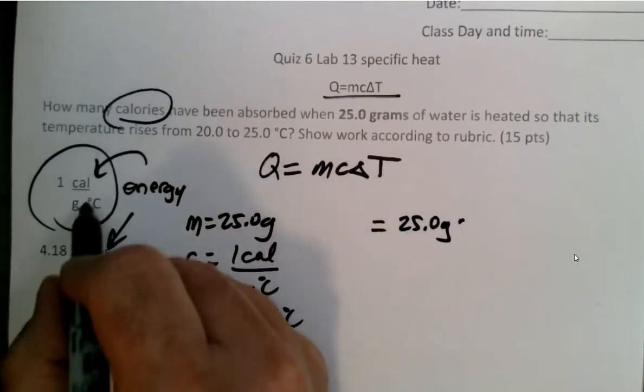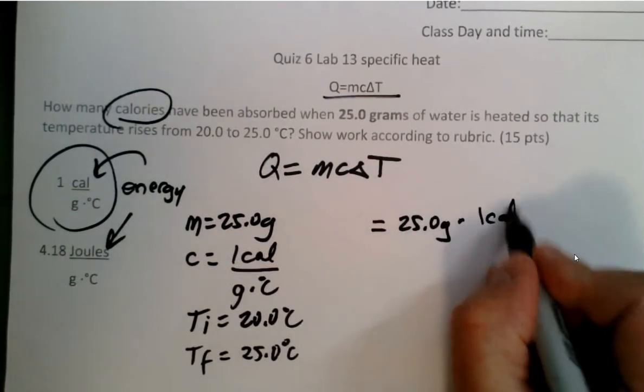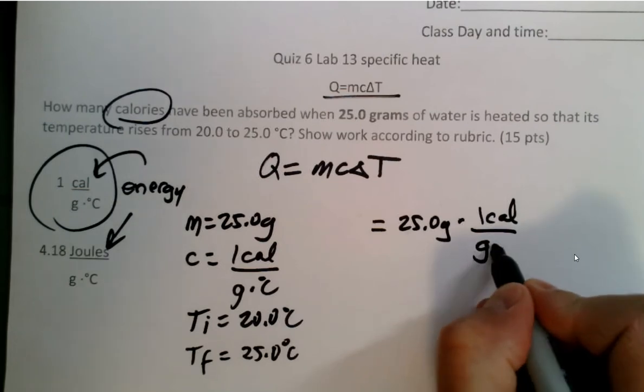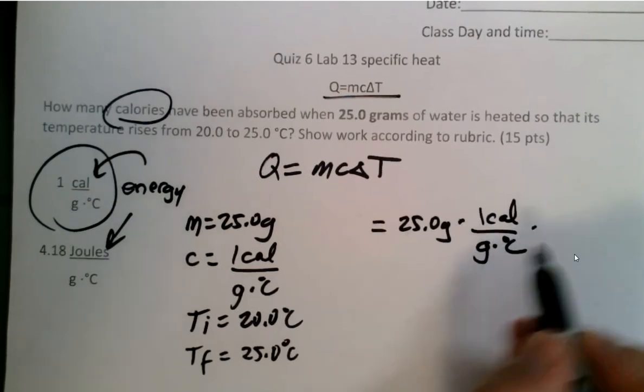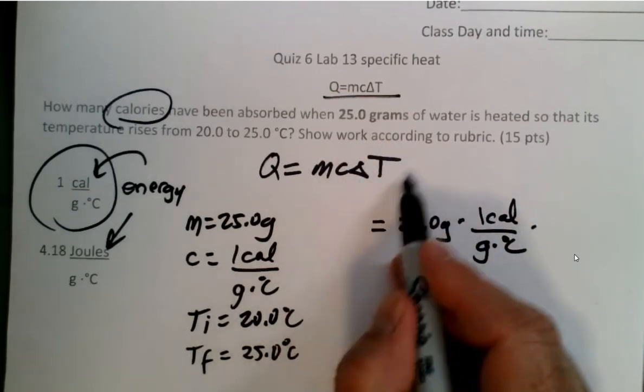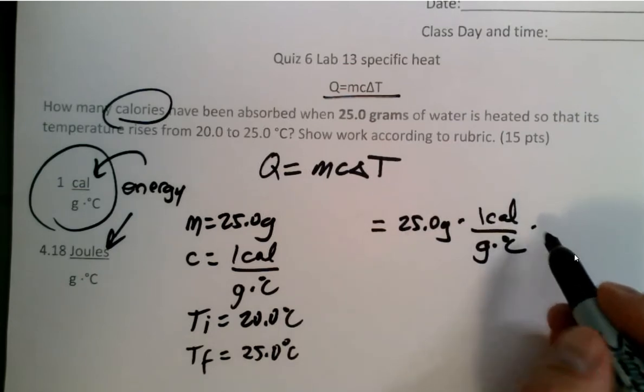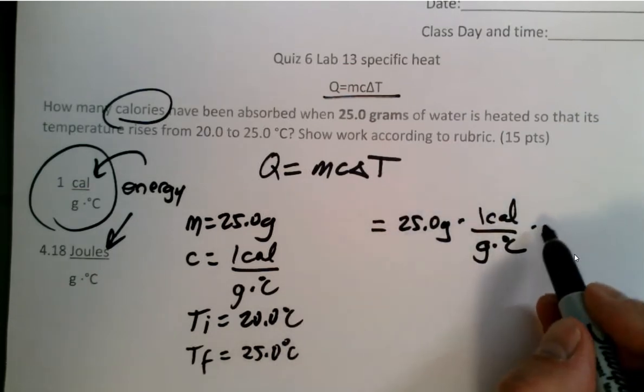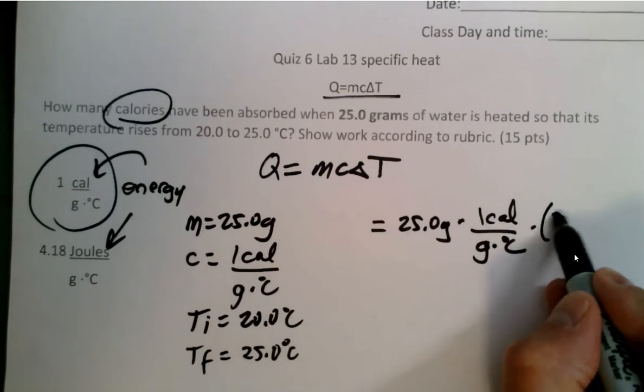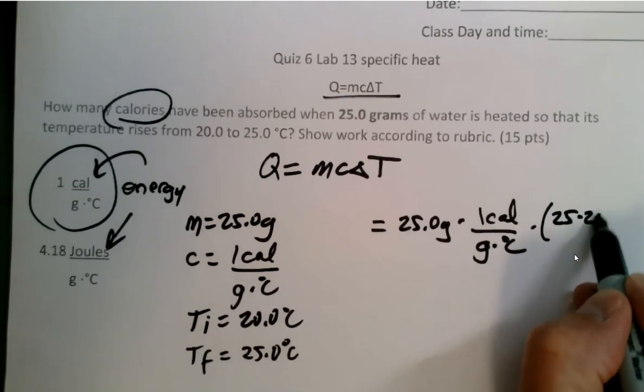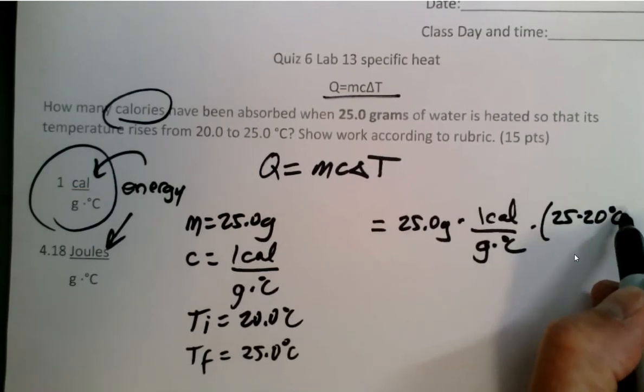We know that the specific heat is one calorie per gram degrees Celsius. We know that we can expand delta T. We can say Tf minus Ti. So why don't we do that? Let's say 25 minus 20.